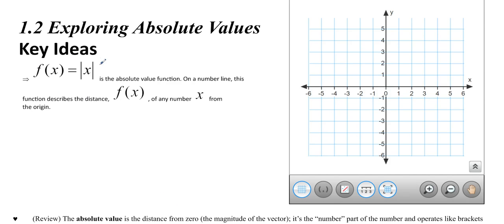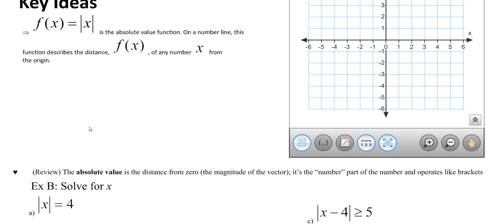f(x) equals absolute value of x is the absolute value function. You may remember it from grade 11. On a number line, the function describes the distance f(x) of any number x from the origin. In other words, the absolute value is the distance from 0 — the magnitude of the vector. You can think about it as the number part of the number, and it operates like brackets.